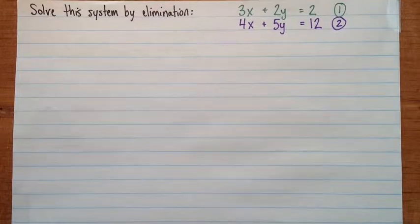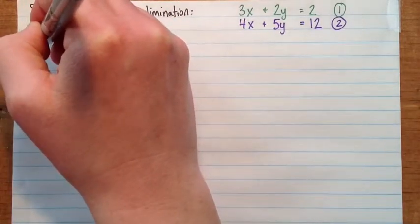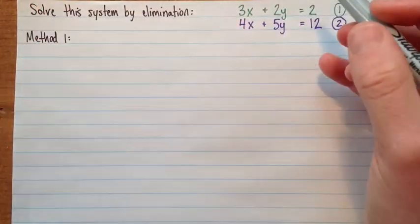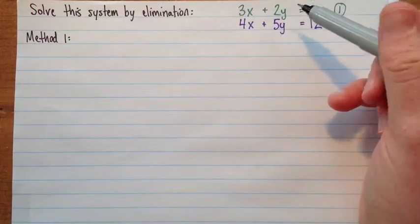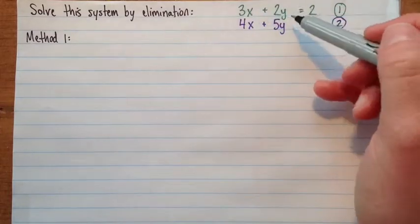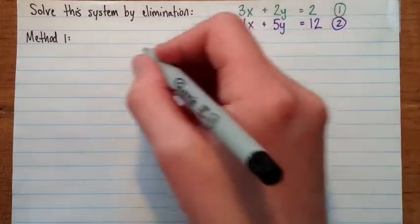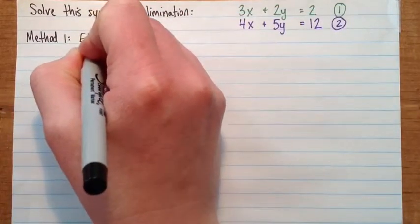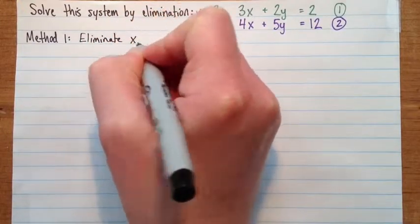Okay. So this, I guess, method one here, the different methods are just which variable you eliminate. So here, we can either eliminate x or y. And in this case, neither one of them is really easier than the other. So first I'll show you how to eliminate, I guess, x first.